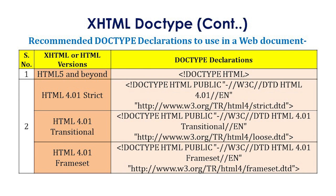As you can see, the latest version in web development nowadays is HTML5 and beyond, so you have to write the doc type declaration like this: first the exclamation sign, then write DOCTYPE space HTML. Similarly, for other versions like HTML 4.0 Strict, HTML 4.0 Transitional, and HTML 4.01 Frameset, the corresponding doc type declarations are mentioned in the table.